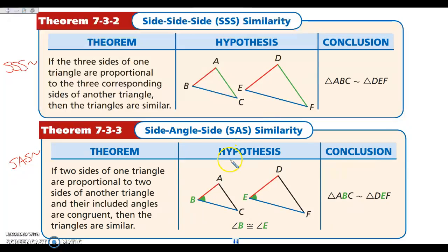Side-angle-side similarity is similar to side-angle-side congruence. We've got two pairs of sides and the included angle. This time, instead of my sides being congruent, my sides must be proportional — so AB has to be proportional to ED, which equals BC over EF. And then angle B and angle E, the angle between the two sides, must be congruent. That's enough to know that my triangles are similar.